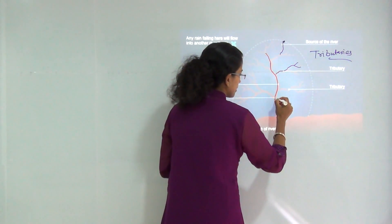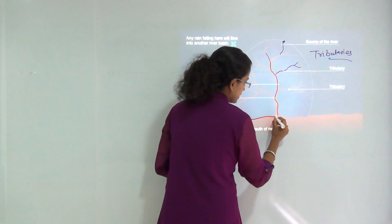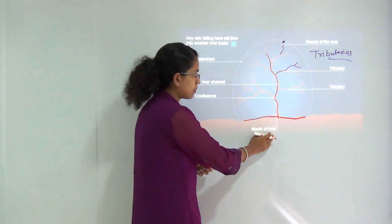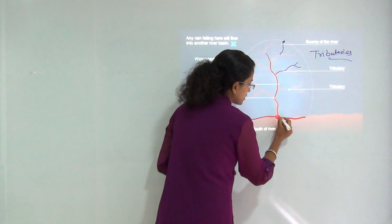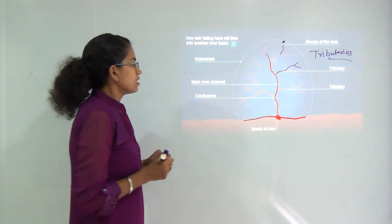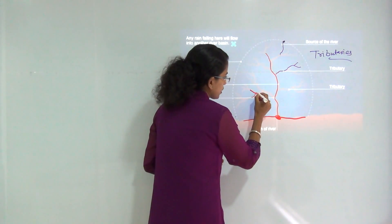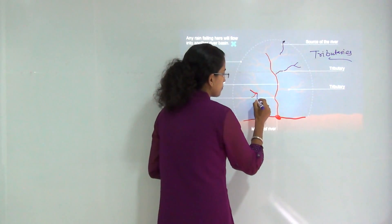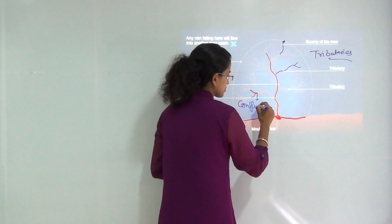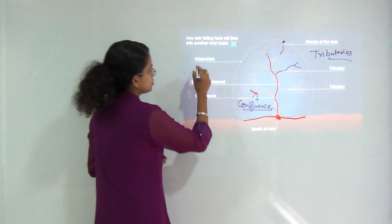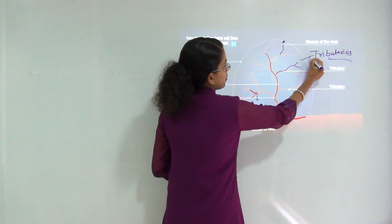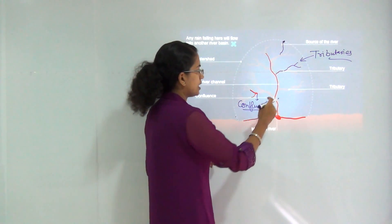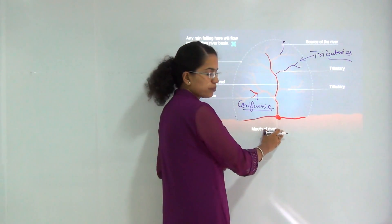This is the main river channel, and it finally empties into an ocean body or a lake body. This place where they meet is known as the mouth of the river. All the rivers which join together at a certain point — the point at which they join — is known as the point of confluence. These tributaries meet into the main channel and this main channel finally empties into a main water body.